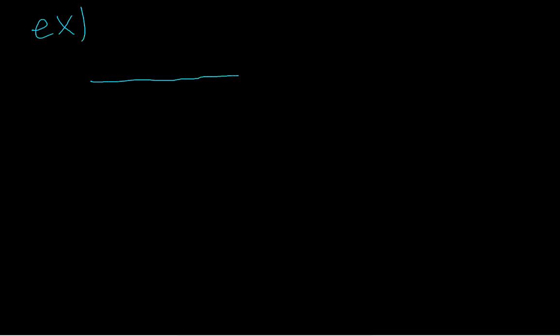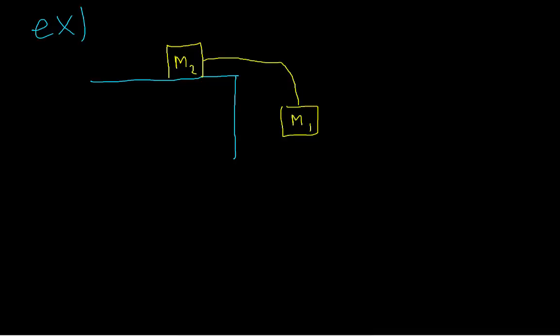Let's look at an example with two blocks, M1 and M2. M2 is on a table with friction and M1 is suspended in the air. We'll analyze the situation right when the blocks start moving, so we only need kinetic friction. The forces on M1 are gravity (M1 times G) and tension in the rope. On block M2, there's gravity, the normal force counteracting gravity, and the friction force pointing to the left because the block is moving to the right. Both blocks have the same acceleration since they're connected by the rope.